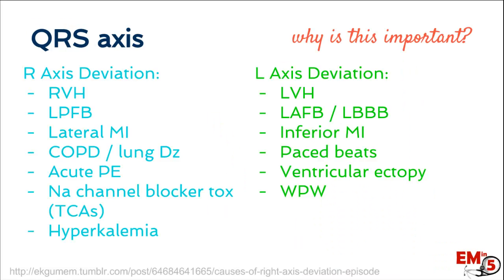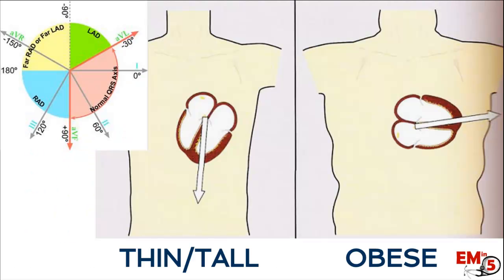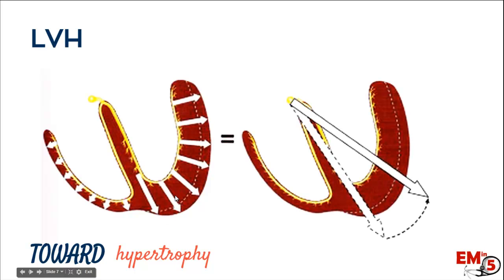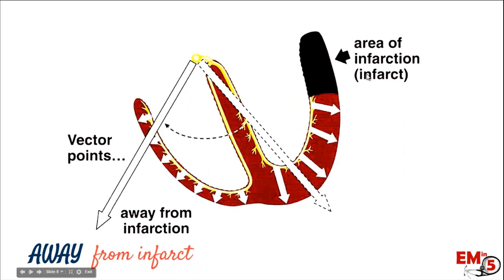Why does the axis really matter for QRS? It gives us good information about the heart. In a taller, thin individual, the heart might be more vertical, meaning the axis is a little on the rightward side of normal. A larger person whose diaphragm pushes up into the heart makes it more horizontal. In left ventricular hypertrophy, the vectors are bigger, swinging the average more towards the left. In contrast, an area of infarct has no electrical activity, swinging the arrow away from the infarct.